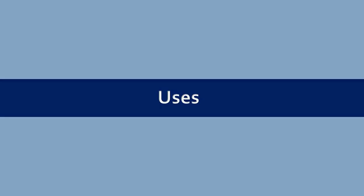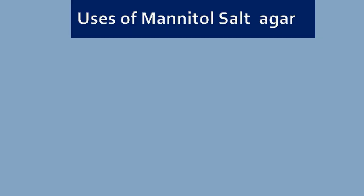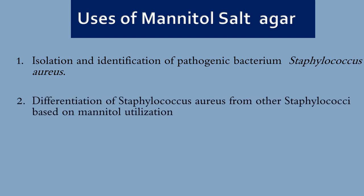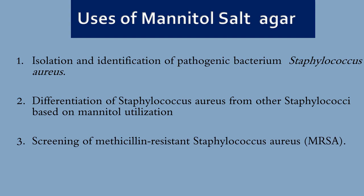Now let's see what are the uses of mannitol salt agar. MSA agar is used for isolation and identification of pathogenic bacterium Staphylococcus aureus. It is used for the differentiation of Staphylococcus aureus from other Staphylococci based on mannitol utilization. It also can be used for screening of methicillin-resistant Staphylococcus aureus (MRSA).